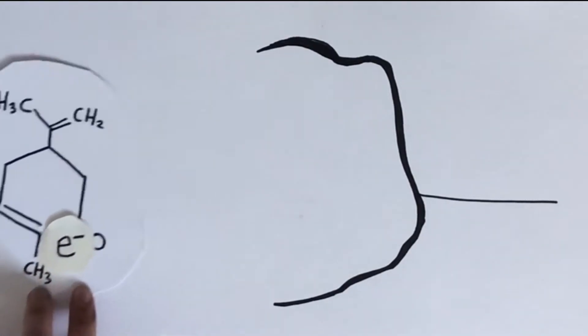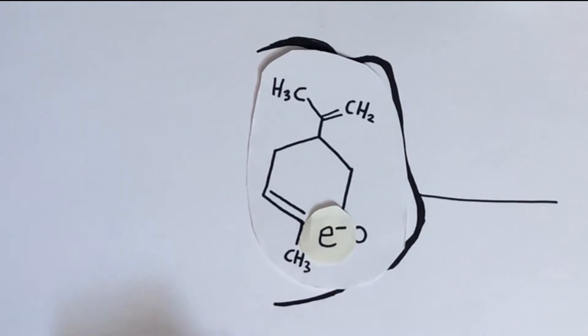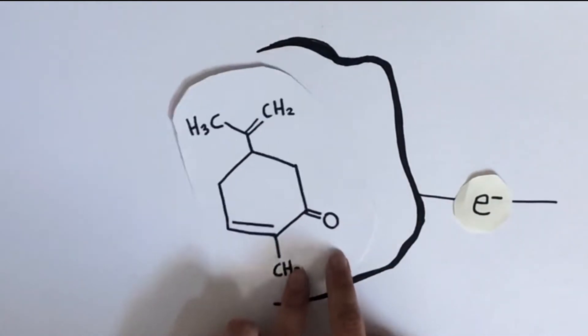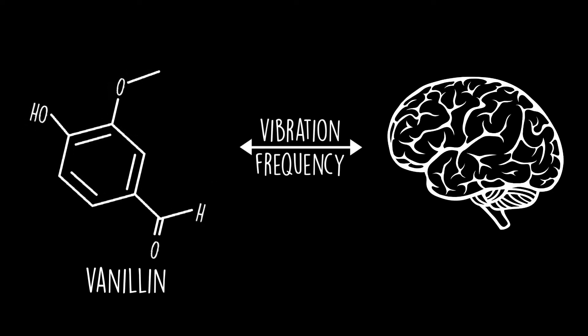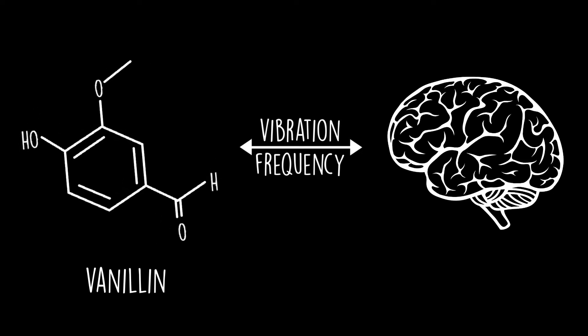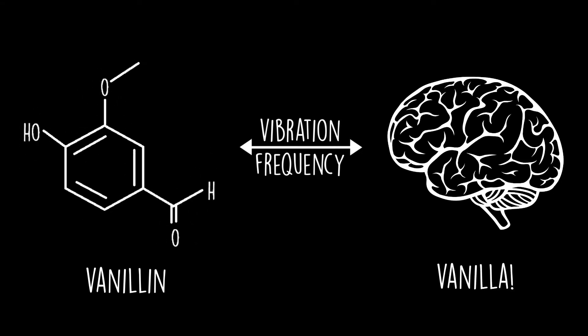With this in mind, we can understand how the presence of an odor molecule allows an electron to pass across our smell receptors and trigger the nerve. This quantum model implies that our brain associates an odor to the frequency at which the concerned molecule vibrates, and several experiments have provided strong evidence towards this theory.